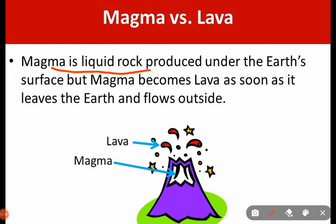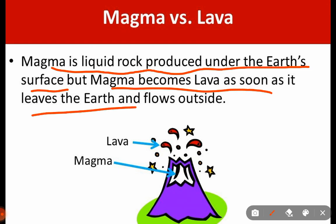Magma is liquid rock produced under the earth's surface. But magma becomes lava as soon as it leaves the earth and flows outside. As you can see here, the liquid rocks found inside the earth's surface are called magma.